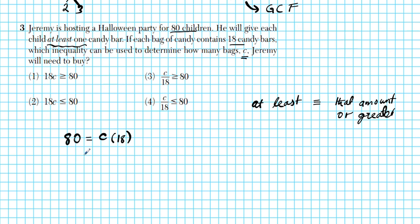To write this as an inequality using 'at least,' the total number of children has to be less than or equal to the total number of candy we have, which is the number of bags times the amount of candy in each bag. If the number of kids were more than this amount, some kids would not have a candy bar. So it could be more, or it could be equal, but it cannot be less than that.